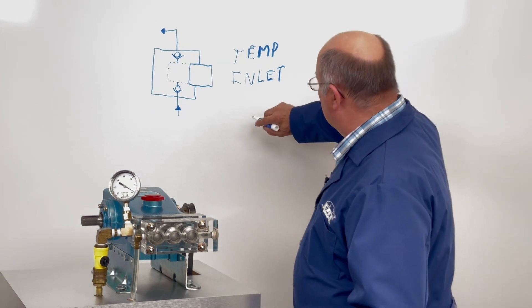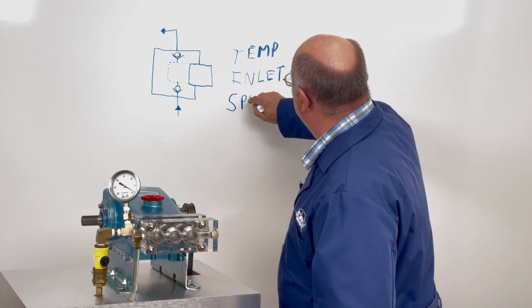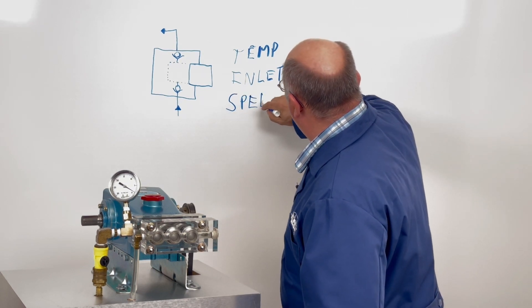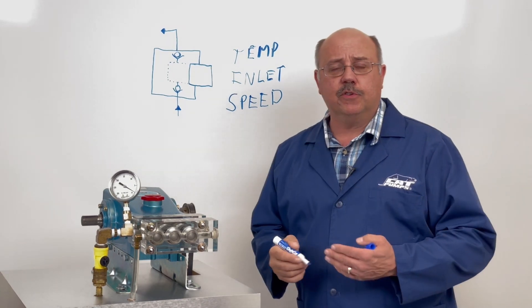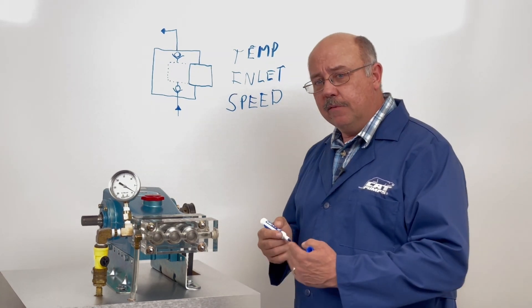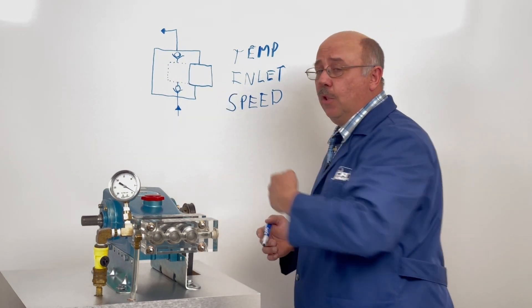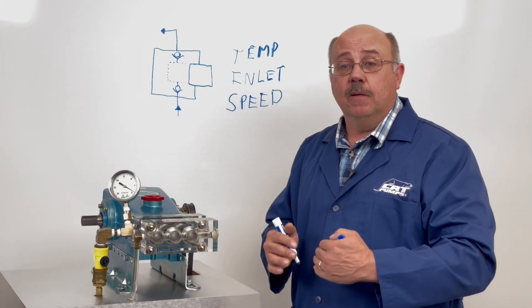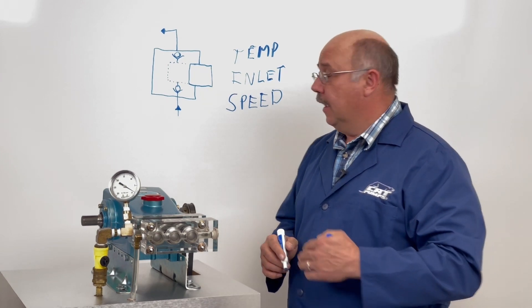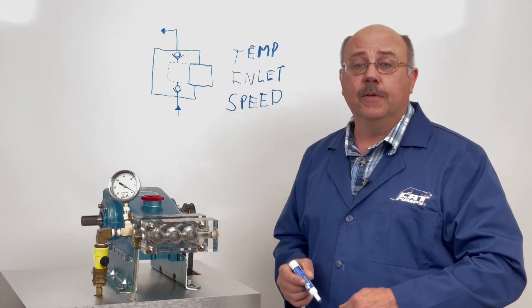The other thing we want to cover is the speed. The speed of the plunger refers to how fast the plungers are going back and forth or the RPM of the pump. If this plunger is moving very slow, it has a lot more time for each stroke to fill the chamber with water. If it's going very fast, it has a lot less time to fill during each stroke.